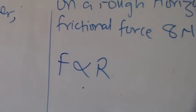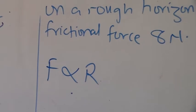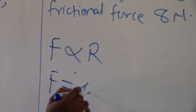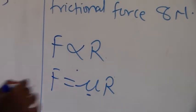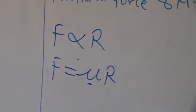Removing the proportionality sign, we will introduce a coefficient or a constant. Now, we have that F is equal to μR. This μ is our coefficient of friction, which is a constant of proportionality.